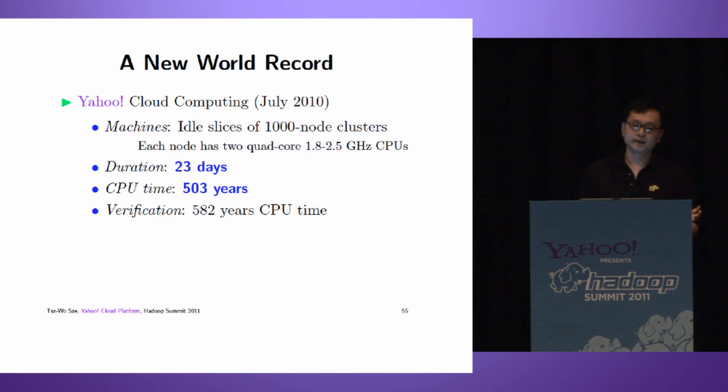In July 2010, we computed a new world record using idle slices of a 1000 node cluster. Each node had two quad-core CPUs, frequency 1.8 to 2.5 gigahertz. The entire computation took 23 days, 503 years of CPU time. This was our first computation. We performed a second computation with different parameters for verification. The second computation took 582 years of CPU time. It took slightly longer because we used a slower cluster.